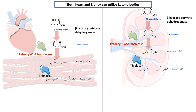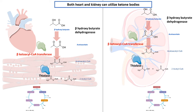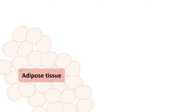Both the kidney and heart have the beta-ketoacyl-CoA transferase enzyme, which is the key enzyme for breakdown of ketone bodies. Both kidney and heart can break down ketone bodies, and in both cases the acetyl-CoA that is generated can be channeled into the TCA cycle, allowing them to generate their own energy.